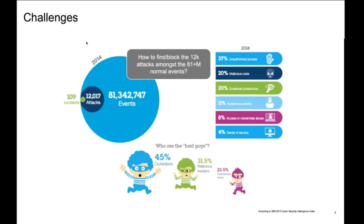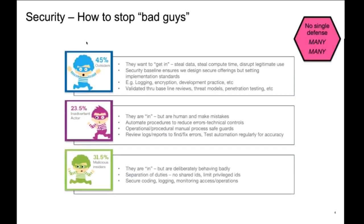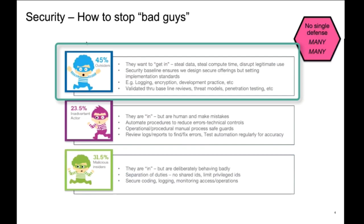Every security control has a purpose. For outsiders trying to get in to steal data, steal compute time, or disrupt your services, you need techniques like encryption, firewalls, and validate through reviews, tests, threat models, and penetration testing. For inadvertent insiders who make mistakes, you want systems and procedures to reduce error-related incidents — prompting for confirmation, automation to reduce human data entry errors. For malicious insiders, focus on separation of duties, limited privileged IDs, restricting access to critical systems and data to the fewest people possible.